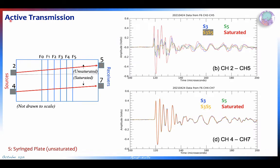We first do active transmission to make sure we understand what these fractures are doing and what their seismic signatures look like. We can also change their saturation — here's an example going from channel 2 through channel 5 with a partially saturated set of fractures, whereas from 4 to 7 they stay fully saturated, so you can see that the fully saturated signals all repeat very well.